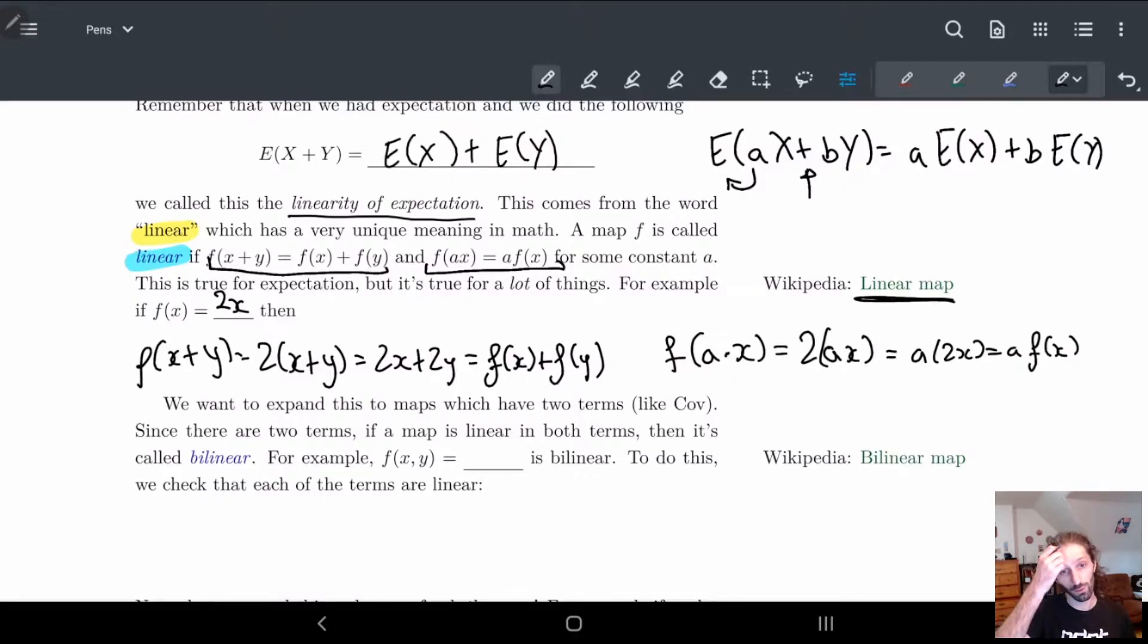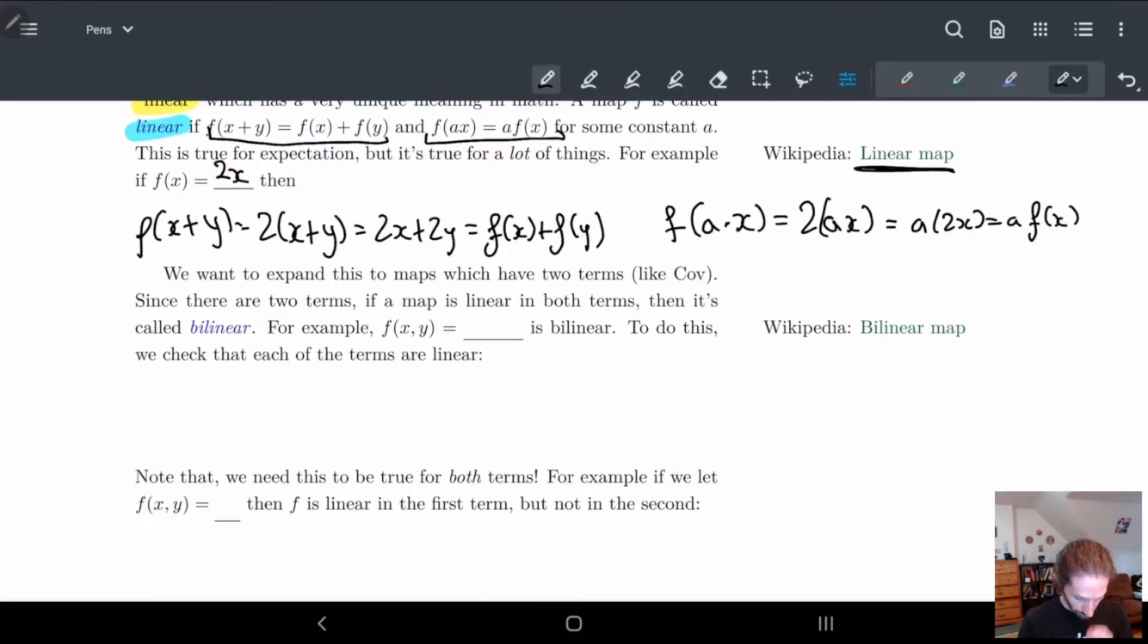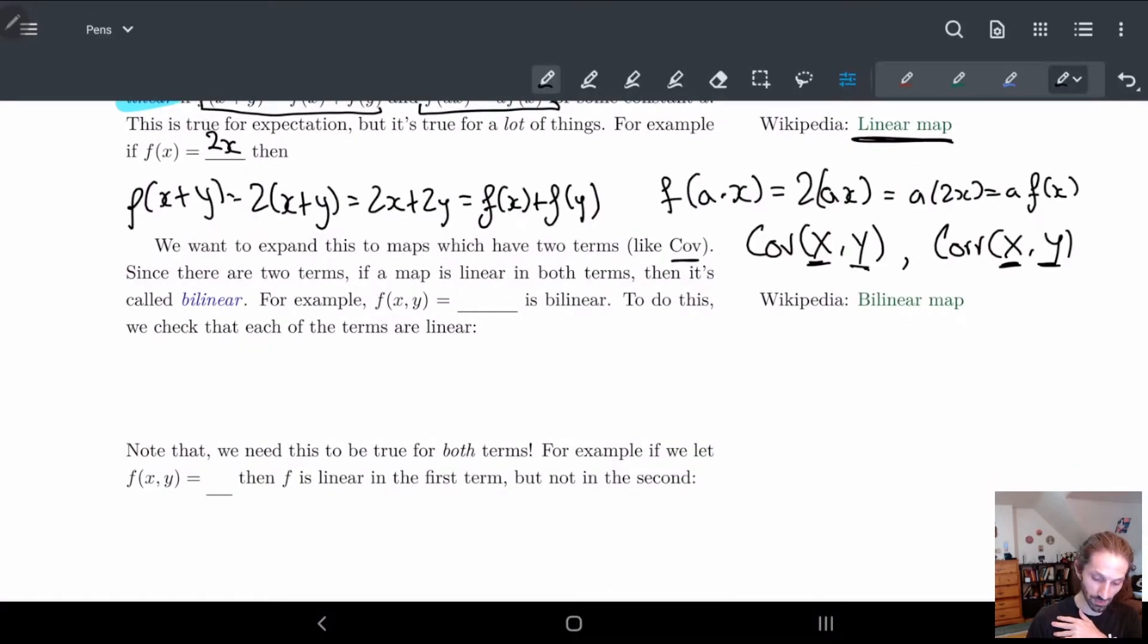So you can kind of see this is true for a lot of functions and these are called linear maps. So you can look it up on Wikipedia if you want but these are called linear maps. And the thing is sometimes we have maps that have two variables right like covariance. Covariance if you recall we said x and y similarly with correlation right we had x and y so we have two variables instead of just one. And now the question becomes well can we do linearity in both terms. And so this is where bilinearity comes from. It's saying well can I take this function that has now two variables and is it linear for both of the things.